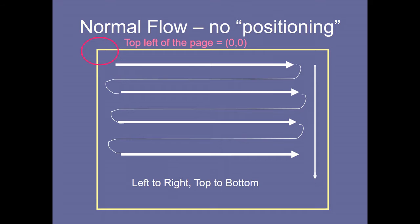This is called normal flow or no positioning. The red circle at the top left is the page coordinate, we can say zero-zero. You can see left to right and top to bottom — those are the arrow marks showing the normal flow. So top-left corner, left to right and top to bottom.